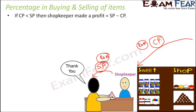Now suppose the shopkeeper had purchased a book for rupees 10, but due to some defect — maybe one or two pages were missing — the customer refused to pay more than rupees 5. So instead of selling it for rupees 15, the shopkeeper sold it for rupees 5. In this case, the shopkeeper did not make any money; instead, he incurred a loss of rupees 5, because the cost price was rupees 10 but he received only rupees 5.